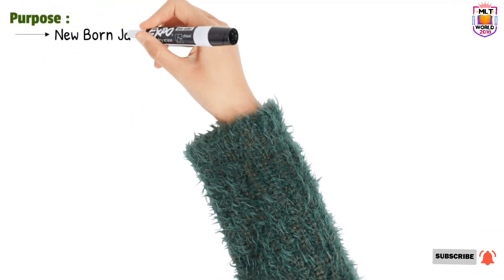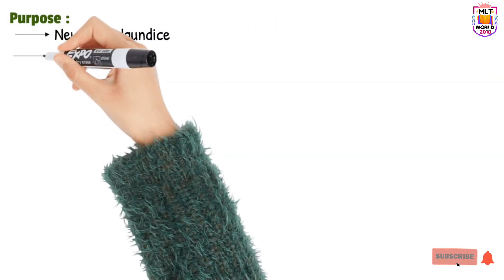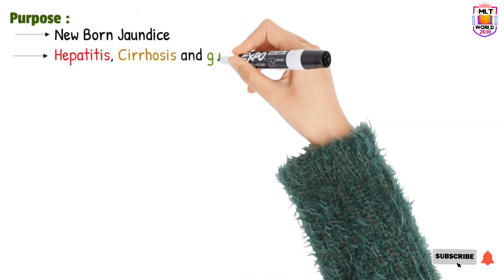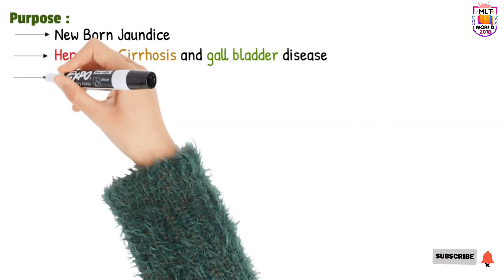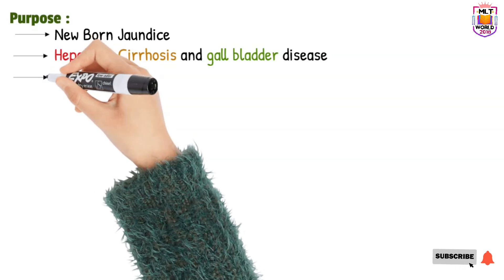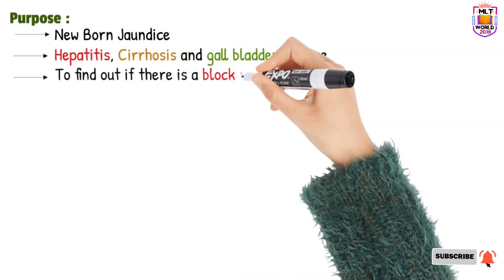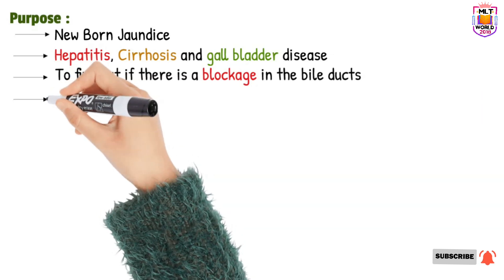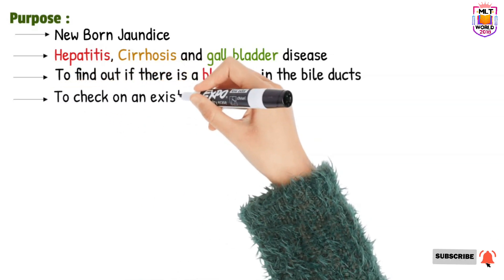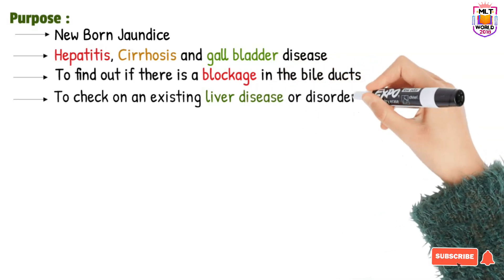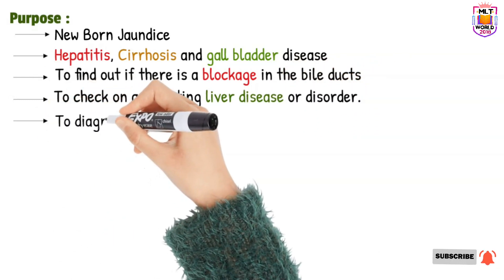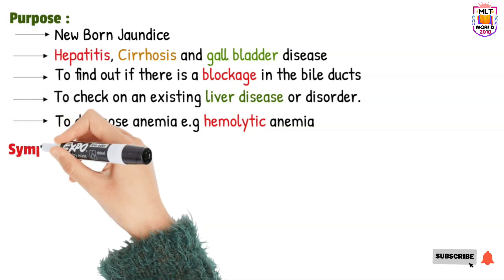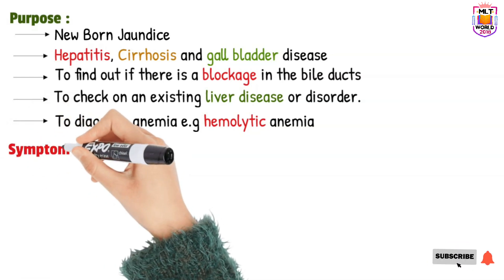The purposes of this test include: checking neonatal jaundice (newborn jaundice), hepatitis, cirrhosis, and gallbladder disease. The test is also required to find out if there is a blockage in the bile duct, to check on existing liver disease or disorders, and to diagnose anemia — for example, hemolytic anemia.